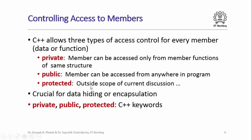It turns out that in C++ there are actually ways to control access for every member, whether it is a data member or a member function of an object. The way we do this in C++ is using three keywords: private, public, and protected. When we say that a member is private, it means it can be accessed only from member functions of the same structure. When we say a member is public, it means that member can be accessed from anywhere in a program. The protected keyword is used to denote a type of access control which is outside the scope of the current discussion.